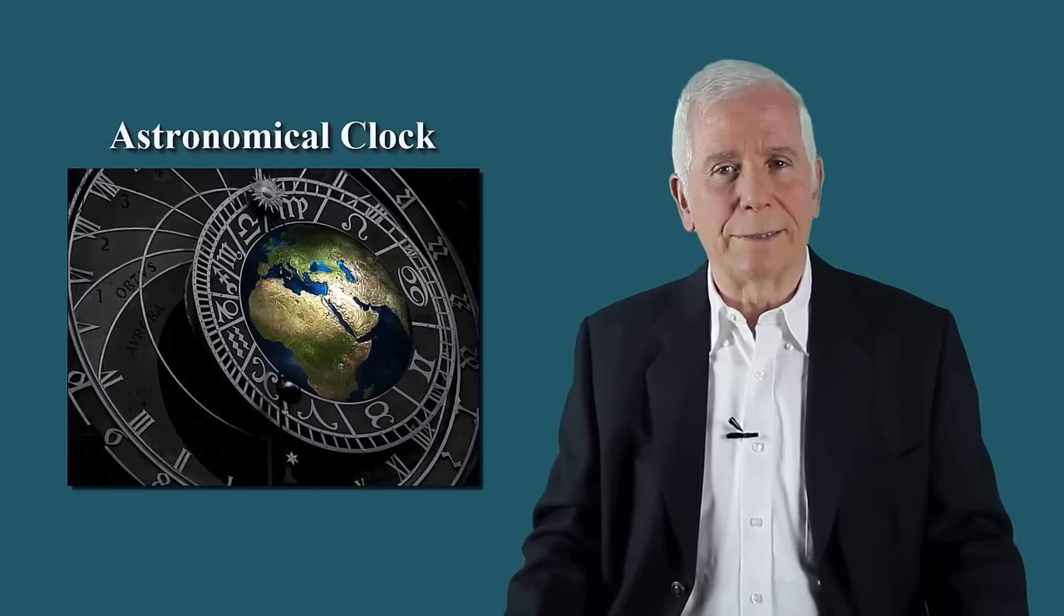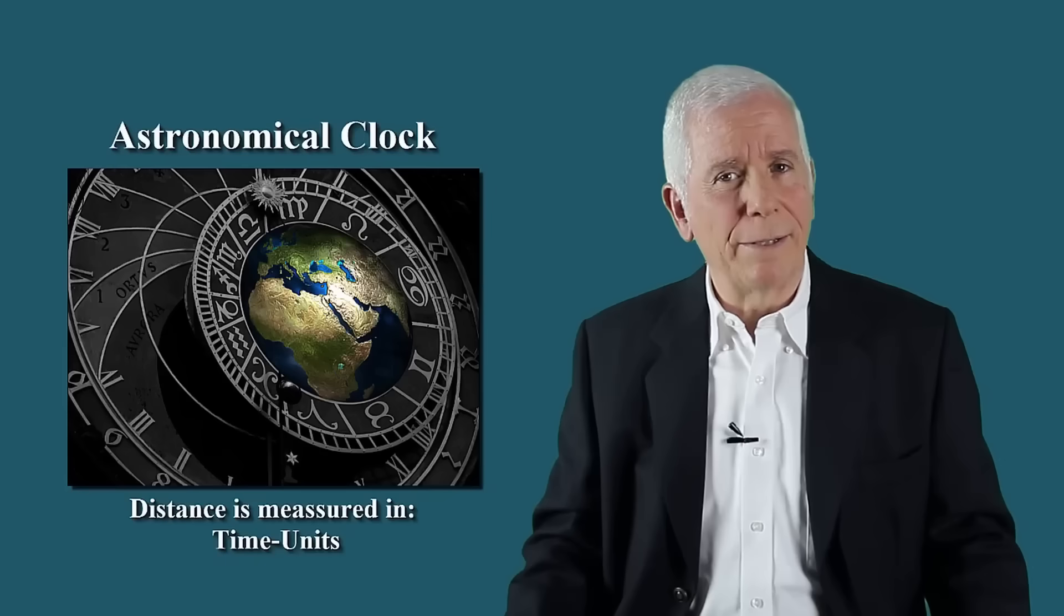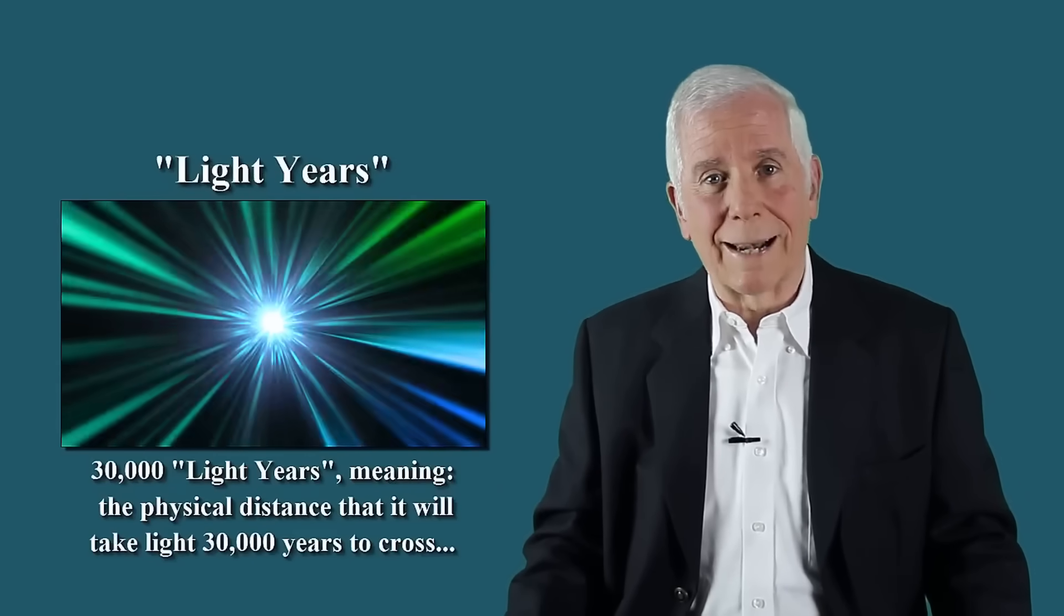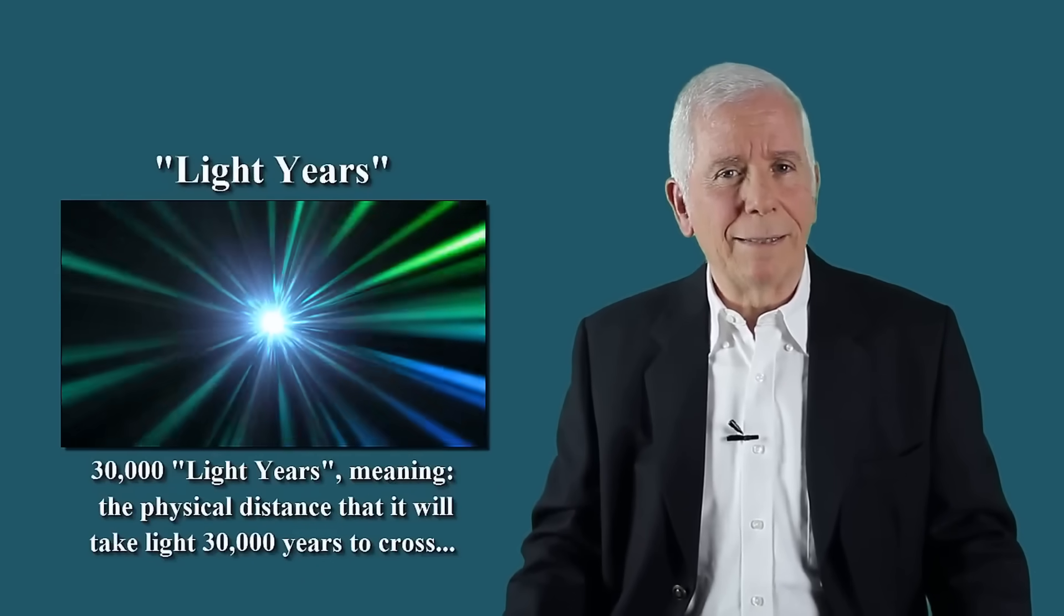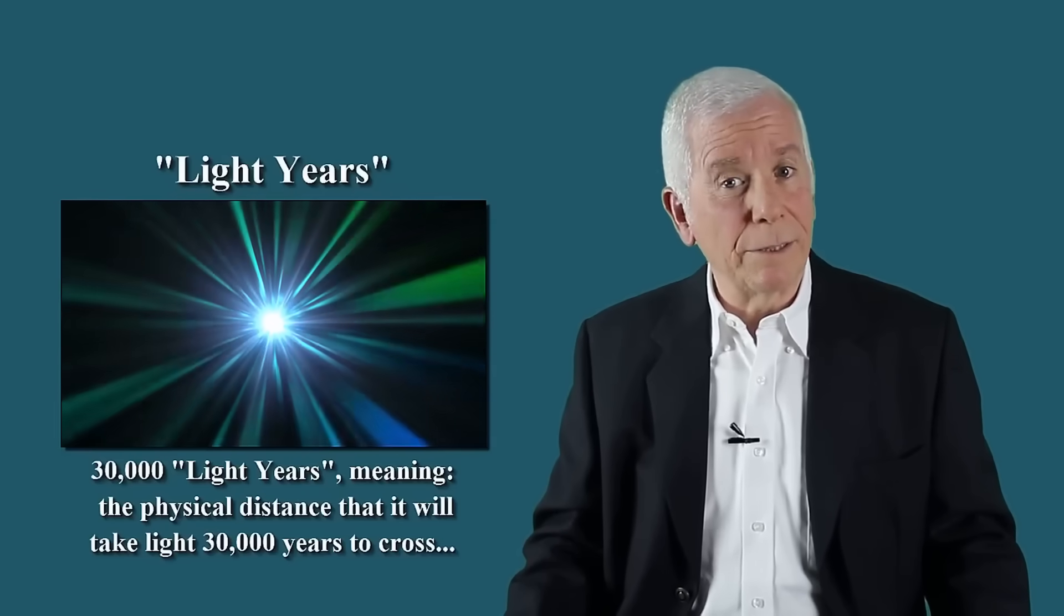In astronomy, it is customary to express distance not in units of physical distance, but rather in time units. For example, 30,000 light years, meaning the physical distance that it would take light 30,000 years to cross.